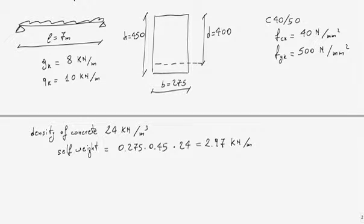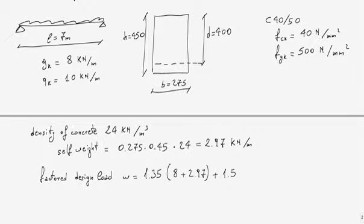The factored design load w equals 1.35 times the permanent loads (8 plus 2.97) plus 1.5 times the imposed loads (10 kN/m). The total factored design load equals 29.8 kN/m.